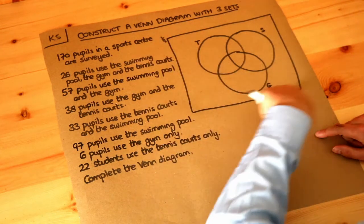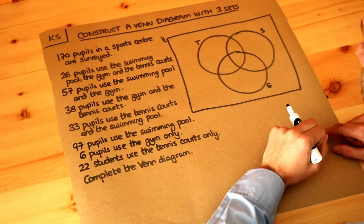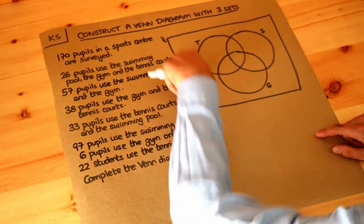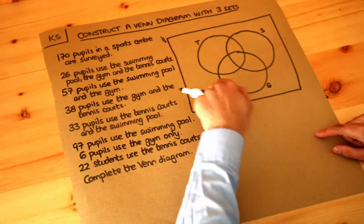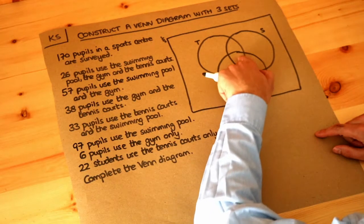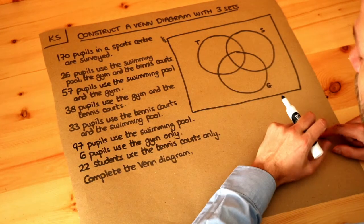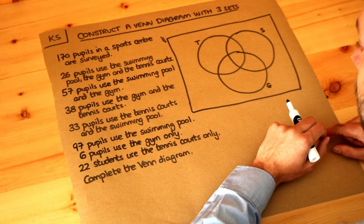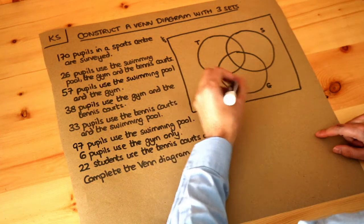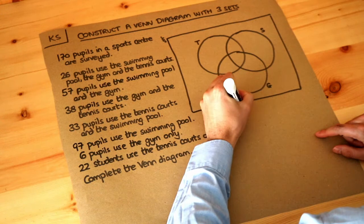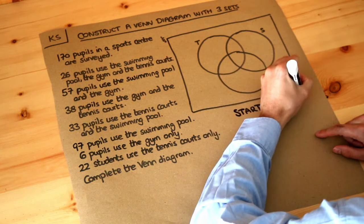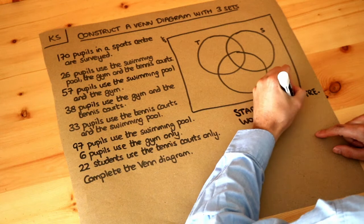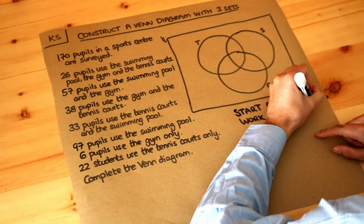Remember, the rectangular box represents everyone of interest — all 170 students in the sports centre. All the numbers in all the regions should add up to 170. My strategy is to start from the centre and work your way outwards, so we're going to start in the very middle of the Venn diagram.